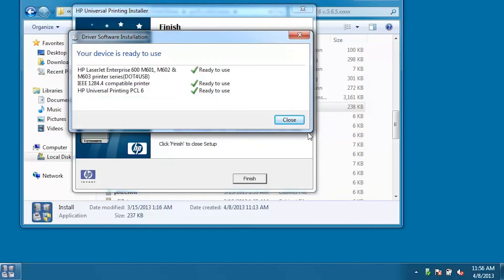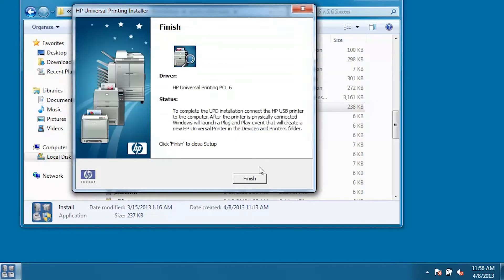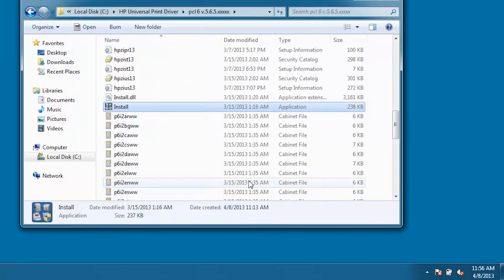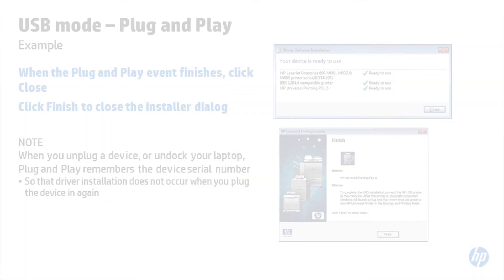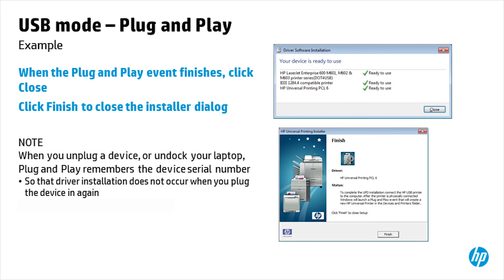When the Plug and Play event finishes, click Close. Click Finish to close the installer dialog. Note: when you unplug a device or undock your laptop, Plug and Play remembers the device serial number so that driver installation does not occur when you plug the device in again. This is independent of the USB port.